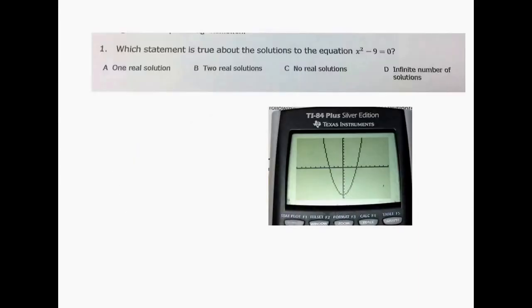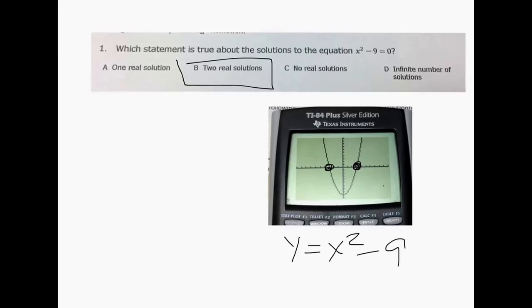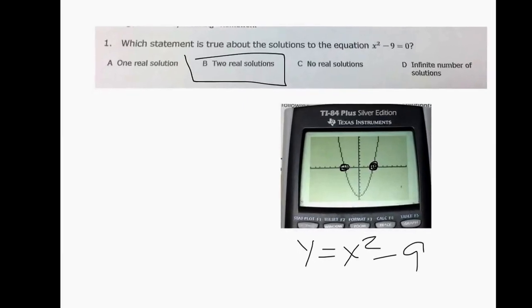The first question says, which statement is true about the solutions to the equation x² - 9 = 0? I went to y equals there and typed in x² - 9, and this is the picture, and you can clearly see that it hits two times. So this has two real solutions. Didn't ask you to find them, just how many it had.